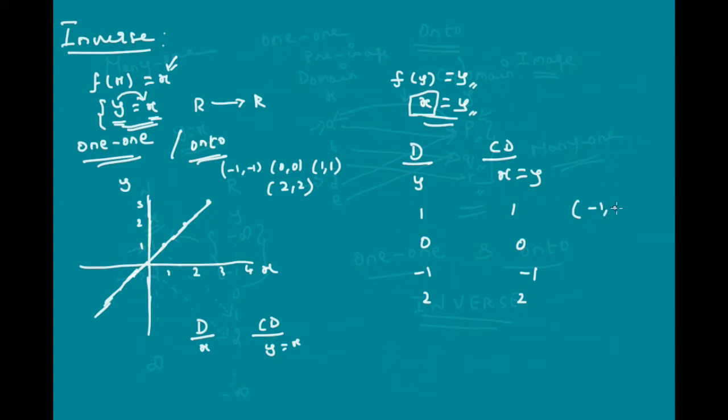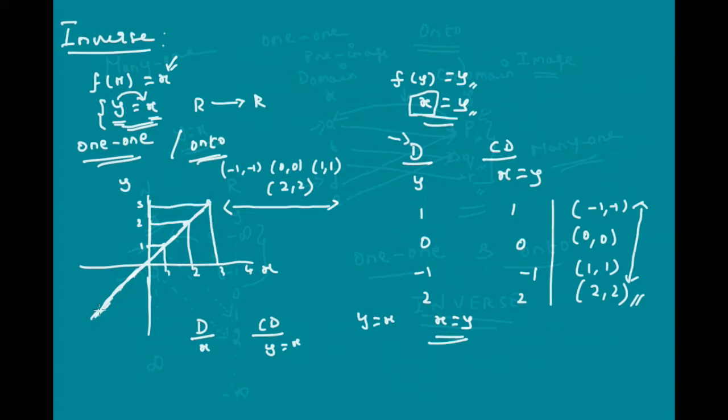Note here the ordered pairs are minus 1, minus 1, 0 and 0, 1 and 1 and 2 and 2. Note that the ordered pairs in the given function is equal to ordered pairs in its inverse as well. Hence, y equal to x or x equal to y, when plotted in a graph, it represents the same line. So, if I plot this curve for y equal to 1, x is equal to 1. For y equal to 2, x is equal to 2. And for y equal to 3, x is equal to 3. So, there is no change in the curve. The line will be the same. Of course, the equations are different. In such a case, such equations are said to possess inverses.